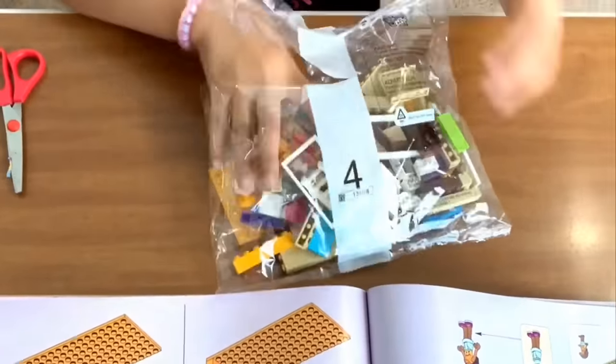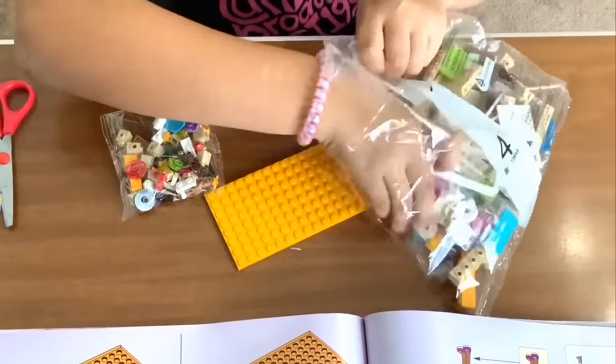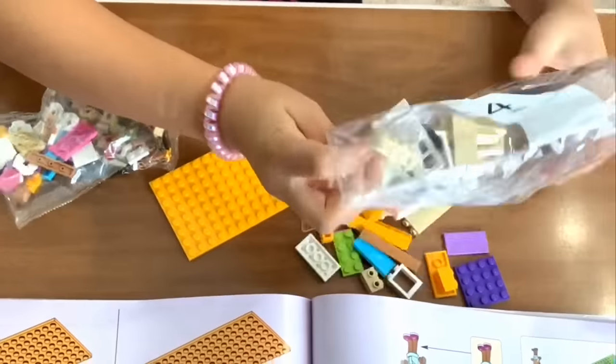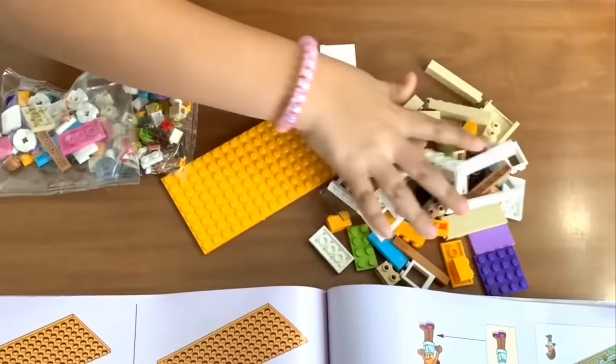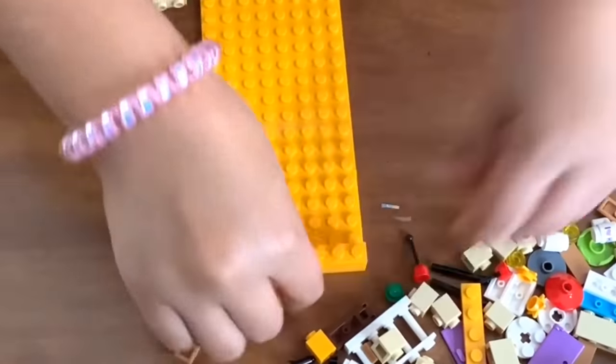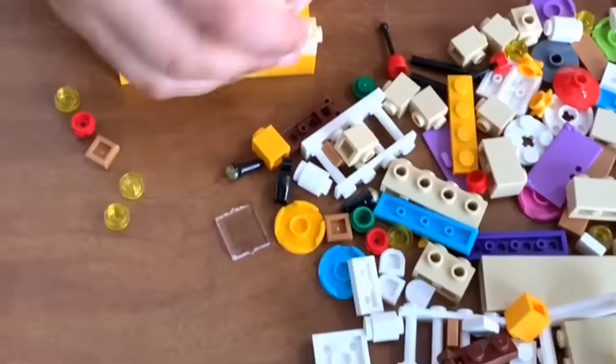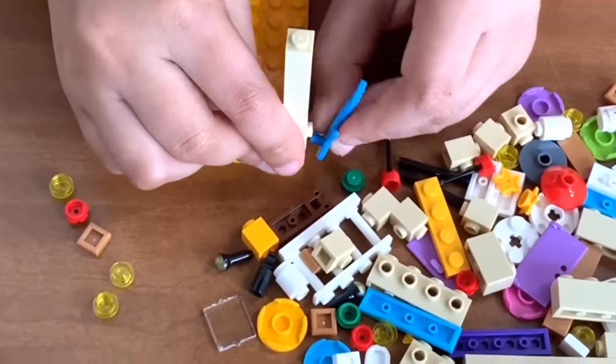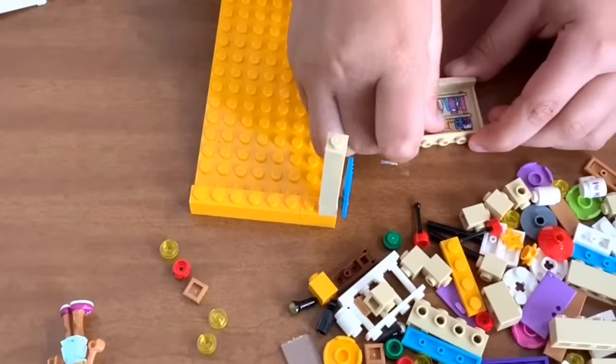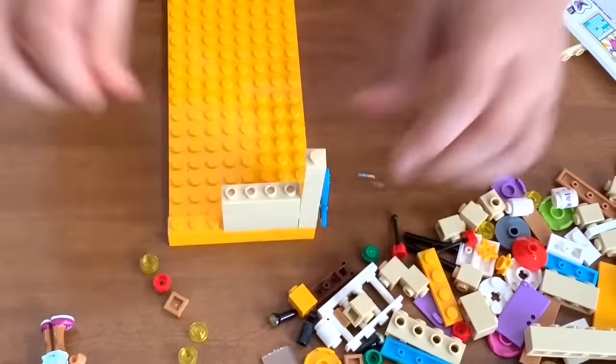We are up to bag number four. Let's get our stuff out. And I'm excited now because guess who we get to build now? Andrea. But we have to go with the build first. So let's see what we're doing. There is her rock and cool guitar. We have some supplies there, as you can see.